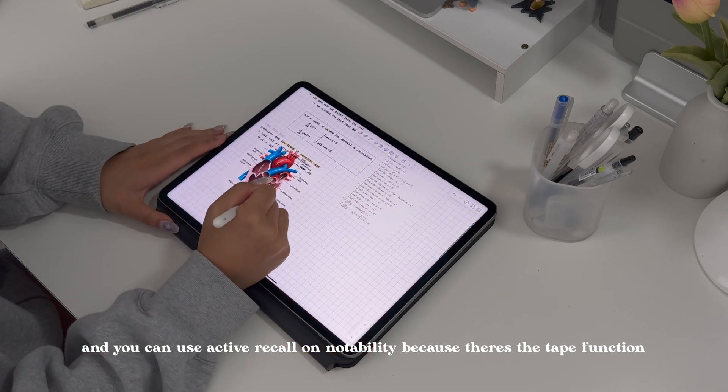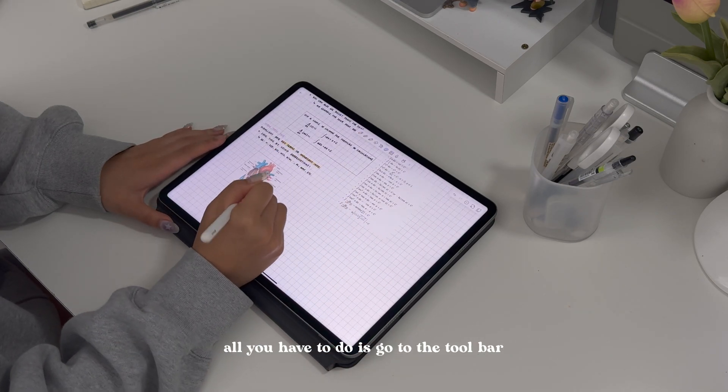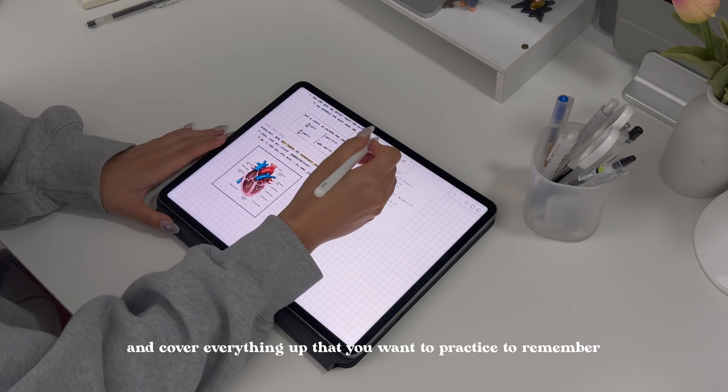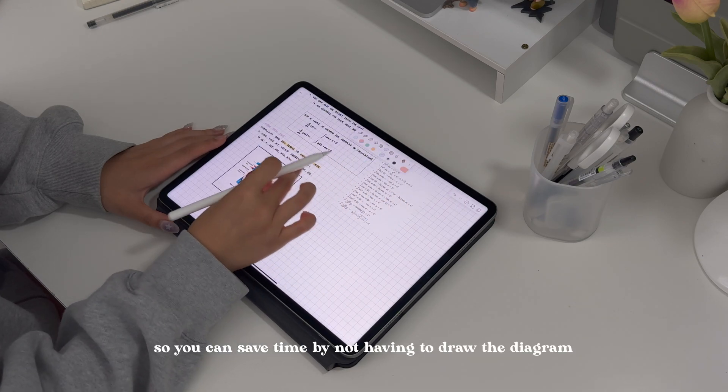You can use active recall on Notability because there's the tape function. All you have to do is go to the toolbar, tap the tape, and cover up everything that you want to practice to remember. You can save time by not having to draw the diagram and practice active recall.